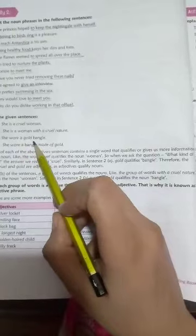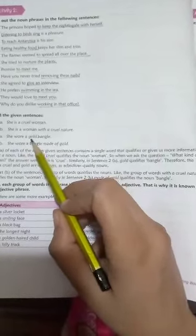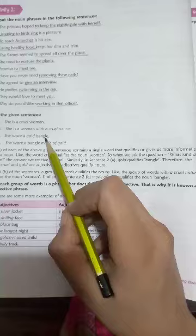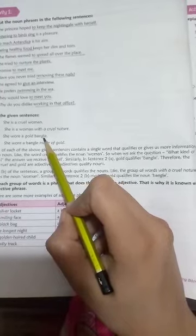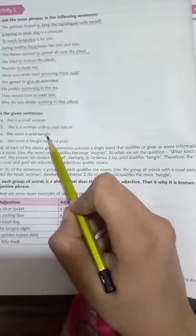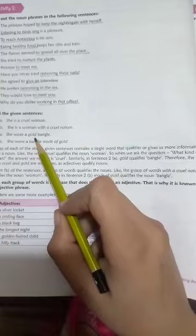She wore a gold bangle. Gold is an adjective. It qualifies bangle. It is a word which qualifies bangle. So it is an adjective.